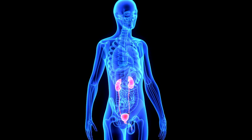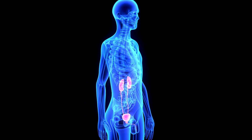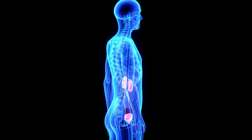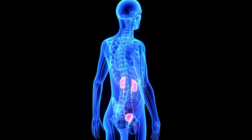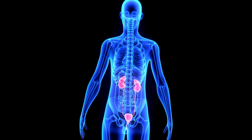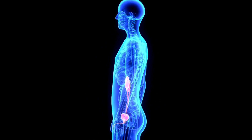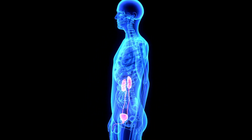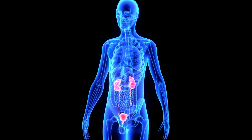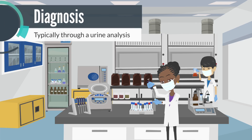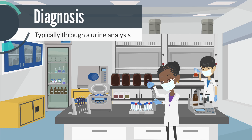If left untreated, urinary tract infections can potentially spread to the kidneys, causing a more severe infection known as pyelonephritis. Kidney infections can lead to complications such as sepsis, which can be life-threatening. Urinary tract infections are typically diagnosed through a urine sample analysis, where the presence of bacteria and white blood cells would indicate an infection.